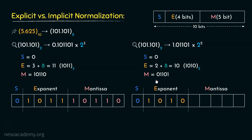Coming to the Mantissa part, after the radix point the bits are 0, 1, 1, 0, 1 — exactly 5 bits. We are going to store this entire bit sequence without losing any bits. So in the Mantissa portion we store 01101. This is how, in case of implicit normalization form, this bit sequence is saved in the fixed 10-bit memory space.